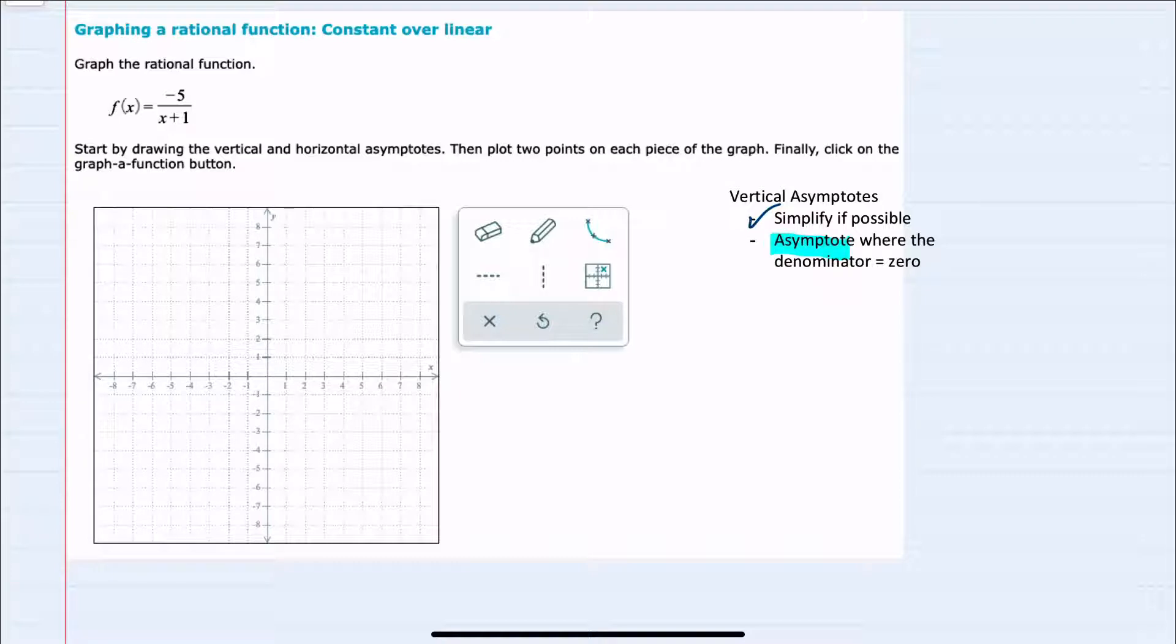And then our vertical asymptote will be where the denominator equals zero. Our denominator is x plus 1, and if I set x plus 1 equal to zero, to solve for x, we would subtract the 1 over and have x equals negative 1. Our vertical asymptote occurs where x equals negative 1.